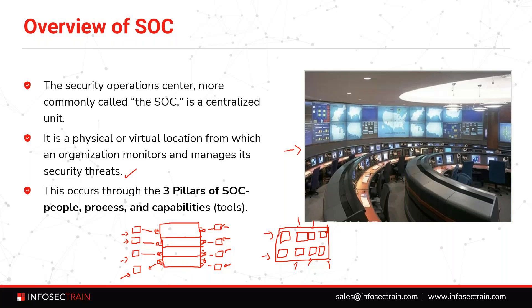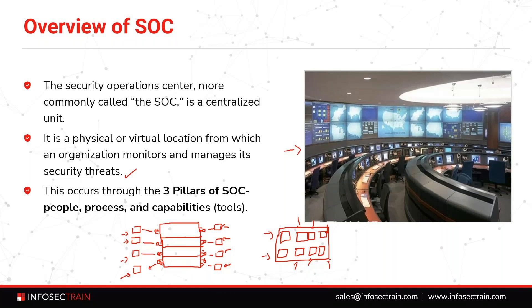If anything suspicious happens, we write correlation rules to make connections. An alert is generated, and we react on those alerts. If anything malicious is happening — like hackers trying to make an attack or someone trying to crack or guess your password — alerts will be generated, detected, and analyzed. We then respond by mitigating that threat and protecting ourselves from that kind of attack.